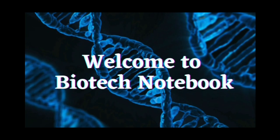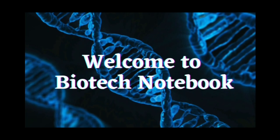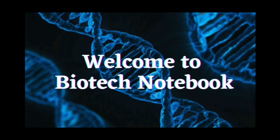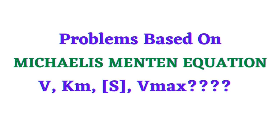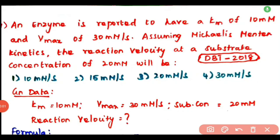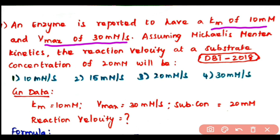Hello everyone, welcome to Biotech Notebook, the platform where you can learn all biotechnology concepts. First problem: an enzyme is reported to have a Km of 10 millimolar and Vmax of 30 millimolar per second. Assuming Michaelis-Menten kinetics, the reaction velocity at a substrate concentration of 20 millimolar will be?